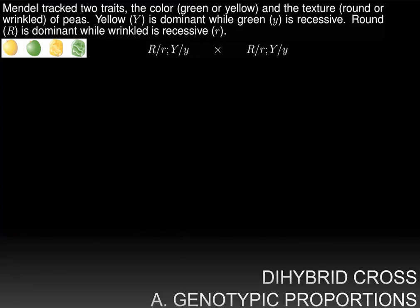Let's work with dihybrid crosses. Dihybrid crosses are like monohybrid crosses but instead of one trait they involve two traits. Mendel tracked two traits: the color, which could either be green or yellow, and the texture, which could be either round or wrinkled. Yellow is dominant while green is recessive. Round is dominant while wrinkled is recessive. In this cross we are taking a dihybrid individual, which means that this individual is heterozygous both for the texture trait as well as the color trait, and crossing them to another dihybrid individual, hence the name the dihybrid cross.